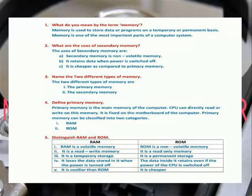ROM is a non-volatile memory. It is read-only memory. It is a permanent storage. The data inside is retained even when the power of the CPU is switched off. It is cheaper.